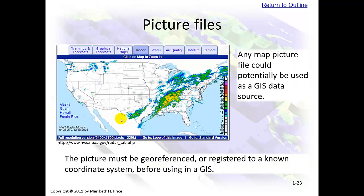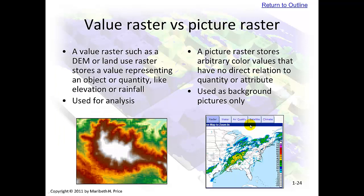Picture files. Any map picture file can potentially be used as a GIS data source. However, it must be geo-referenced — registered to a known coordinate system — before we use it in GIS. In the certificate program at UW Tacoma there is a specific lab based on geo-referencing. A value raster has different values and would be a DEM or land use raster, often used for analysis. A picture raster stores arbitrary color values with no direct relation to quantity or attribute and is used as a background picture only.